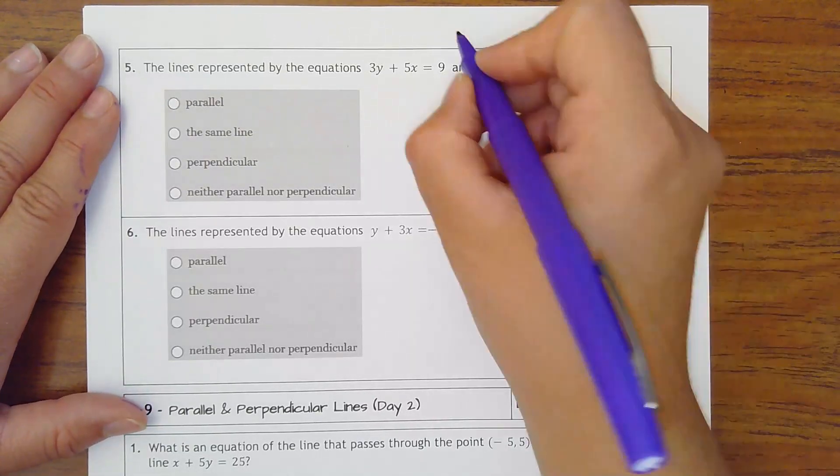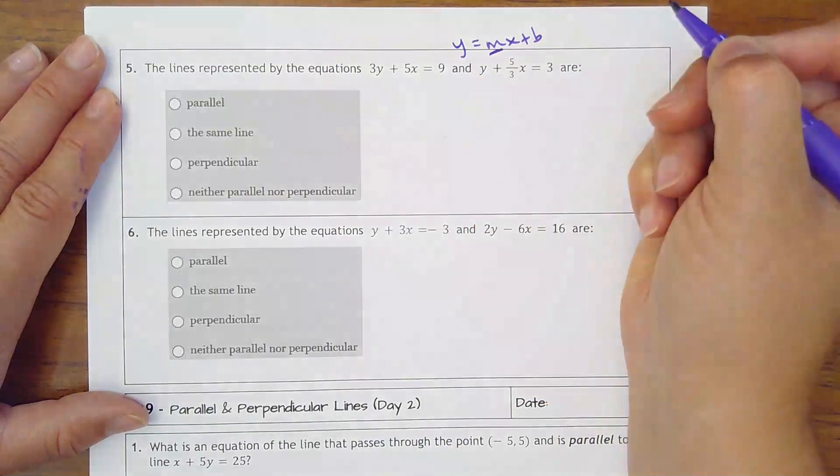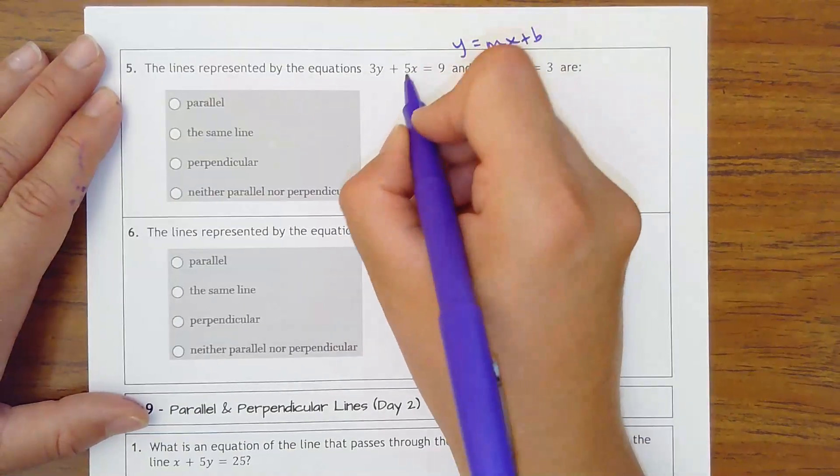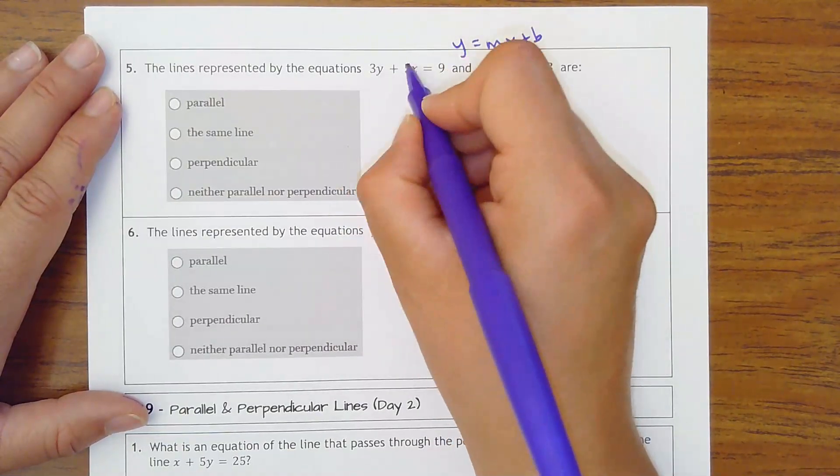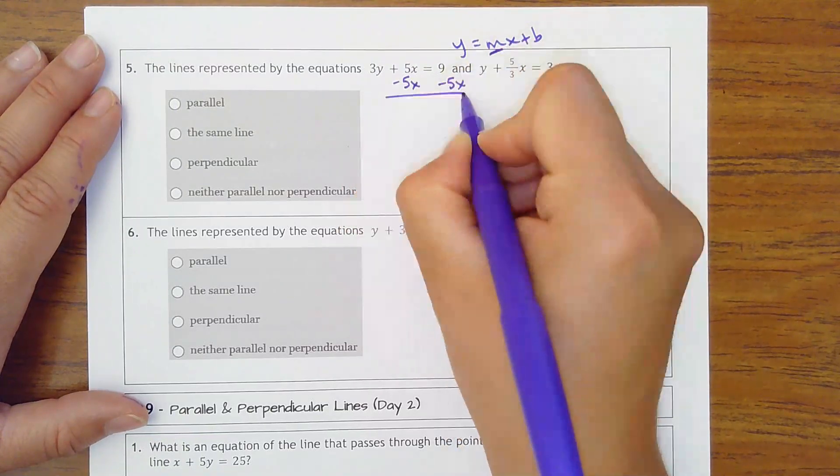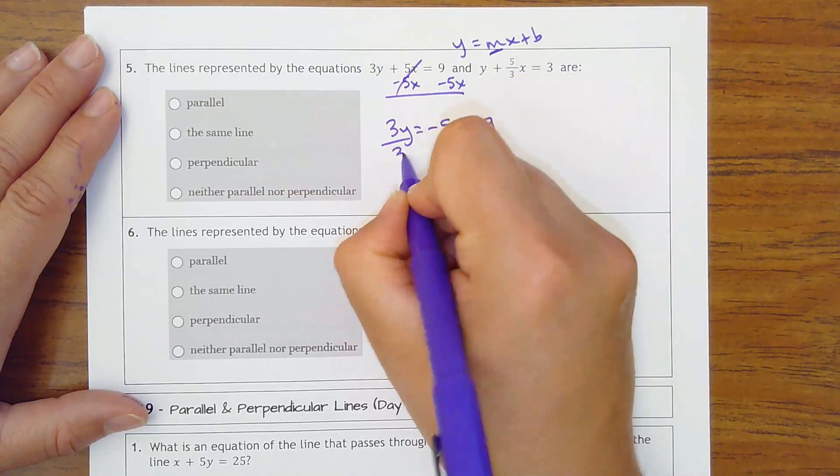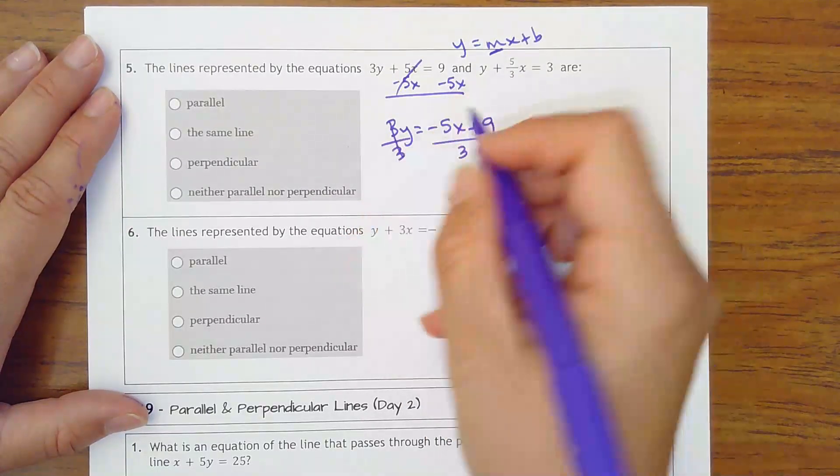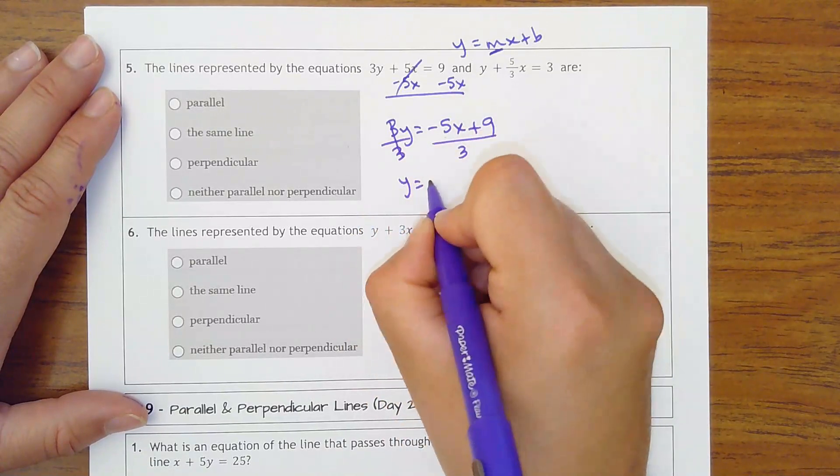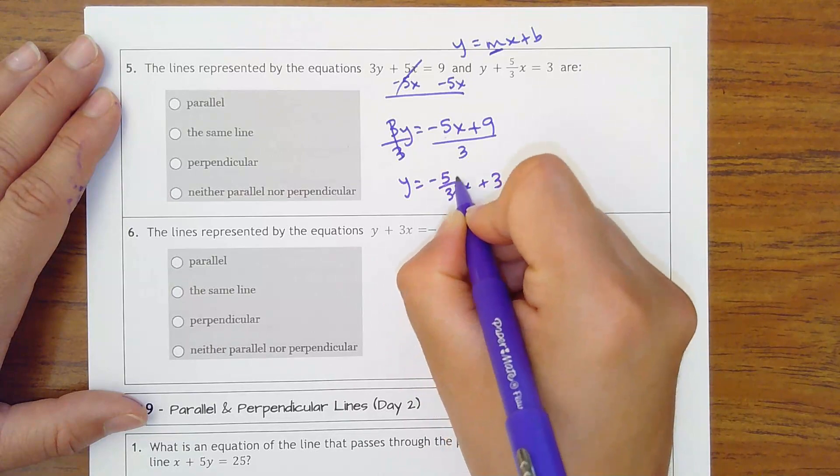So what we have to have them in is y equals mx plus b to know what the slope is. So on this one, I would switch it up again. I'm going to subtract the 5x over. So I get 3y equals negative 5x plus 9. Divide everything by 3. So I get negative 5 thirds x plus 3. So there's this slope.